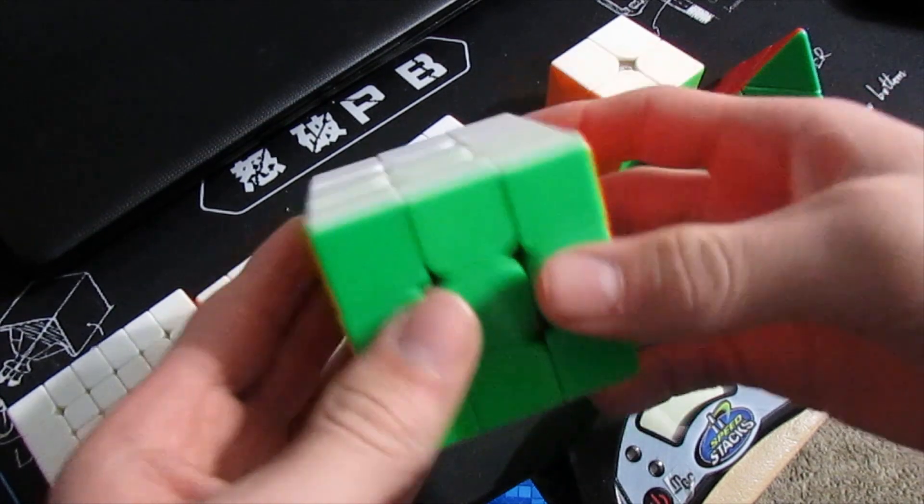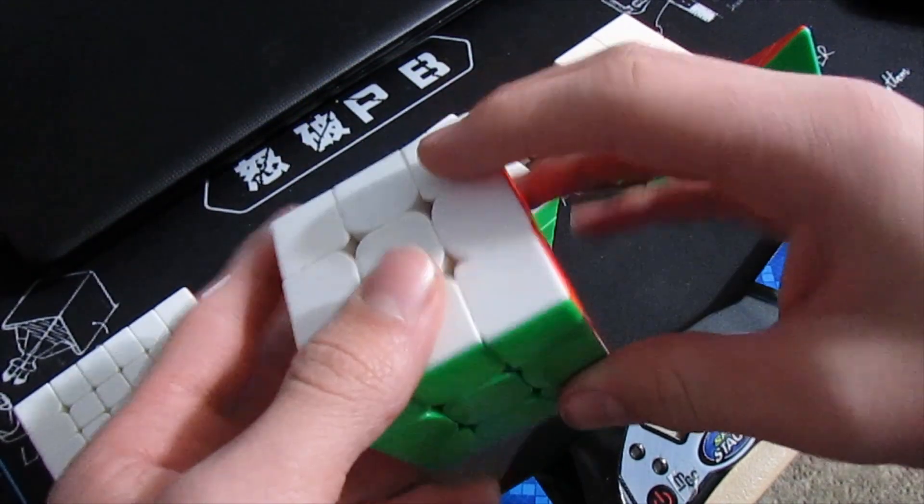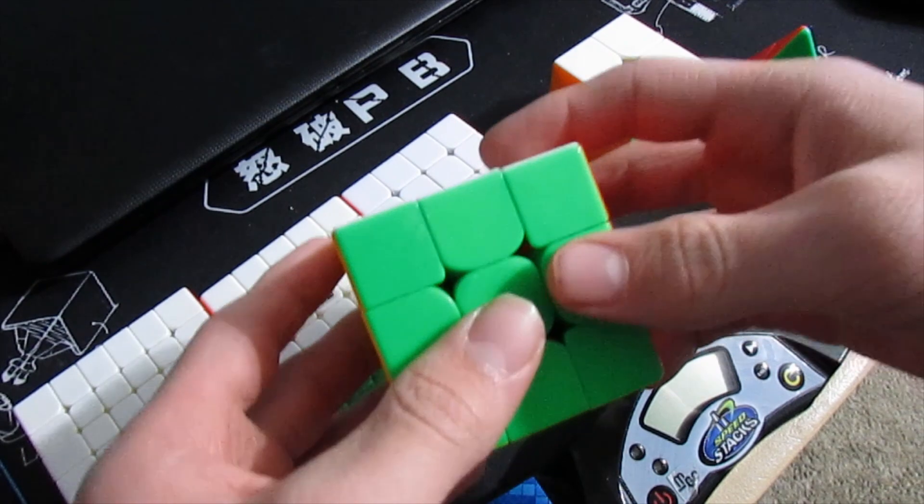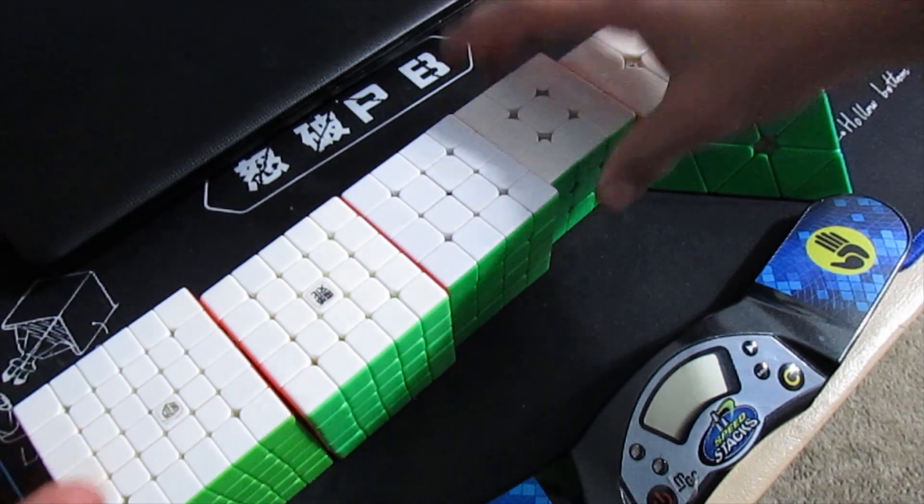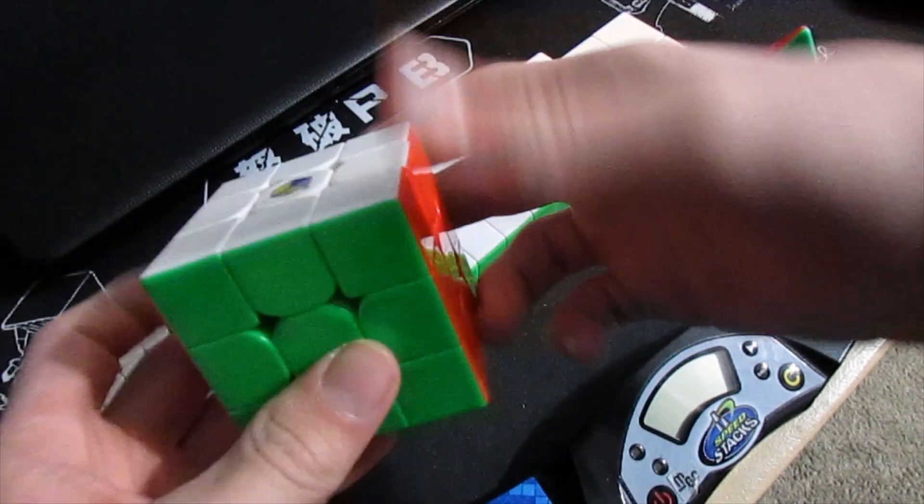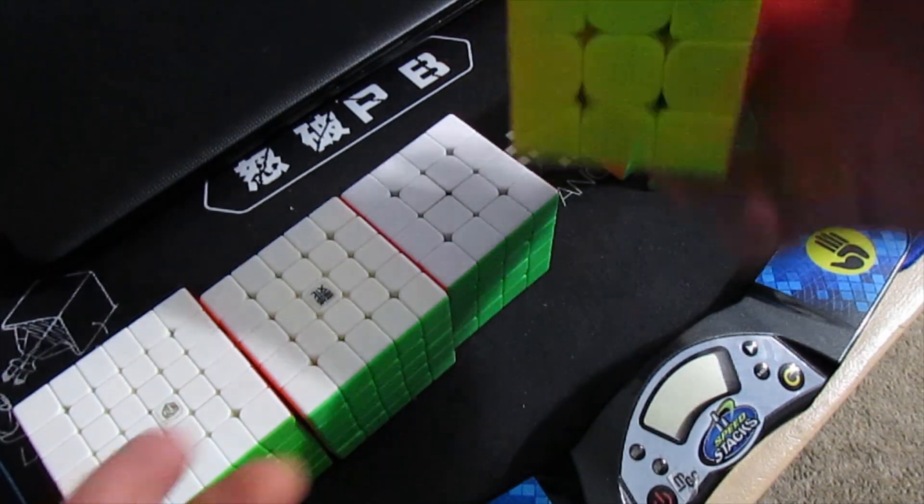Next up, 3x3. I'm using my Cubicle Labs Yushin Lo Magic M. I decided not to switch to the Hualong because I wasn't used to it enough or it just wasn't my style.